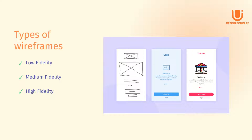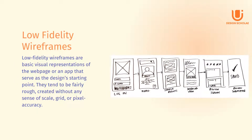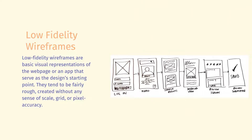Types of wireframes: low fidelity, medium fidelity, and high fidelity. Low fidelity wireframes are basic visual representations of the web page or an app that serve as the design starting point. They tend to be fairly rough, created without any sense of scale, grid, or pixel accuracy.